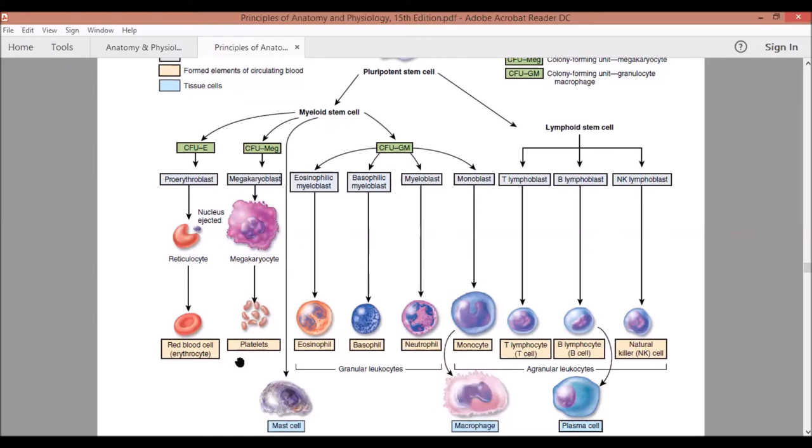Now let's go to the other lineages. We have here your mast cell, but we will be discussing it a little later. So directo siya from myeloid stem cell na nagiging mast cell.